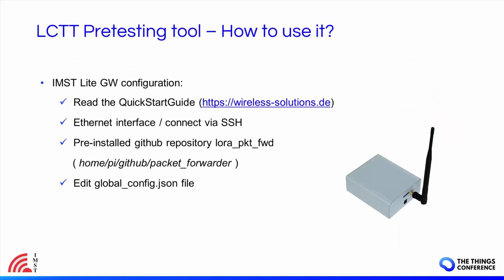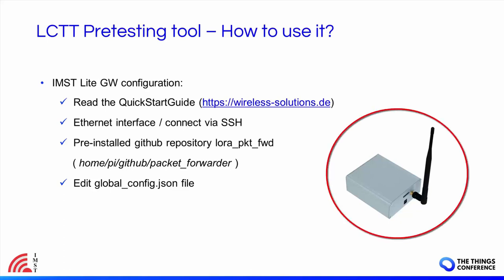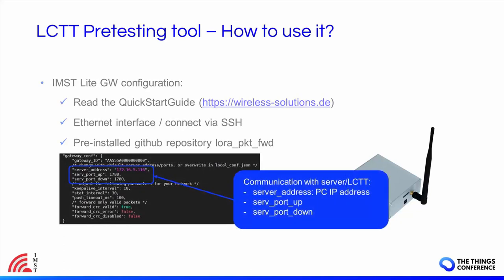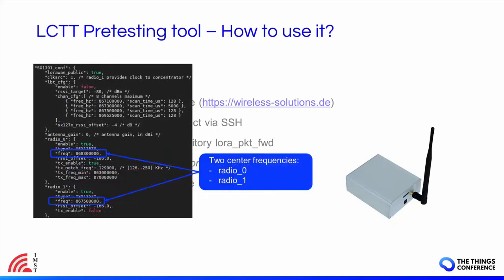Once your end device is ready and the LCTT tool is installed, you should configure the LoRaWAN gateway. If you choose the IMST Light Gateway, follow the quick start guide. Basically, you need to power it up, connect it to your computer with an Ethernet cable, and access it via SSH. For configuration, run the LoRa packet forwarder available on GitHub and also pre-installed on the gateway image. Two settings in the global config file should be modified: the server address — enter the IP address of the computer where the LCTT is running — and remember the server UDP ports configured, as you will need to enter the same values in the LCTT.